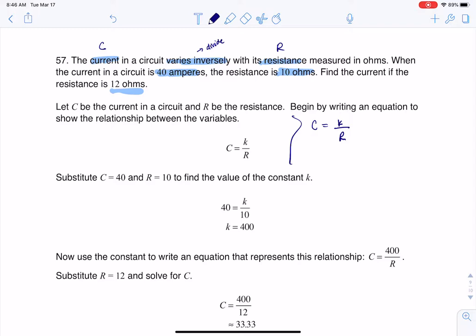And here is my first ordered pair. I see it as 40 and 10. So let me go ahead and plug in 40 for the current and 10 for the resistance. And now if I want to solve for k, I'm going to multiply by 10 on both sides. So if I solve for k here, we're looking at k equaling 400.